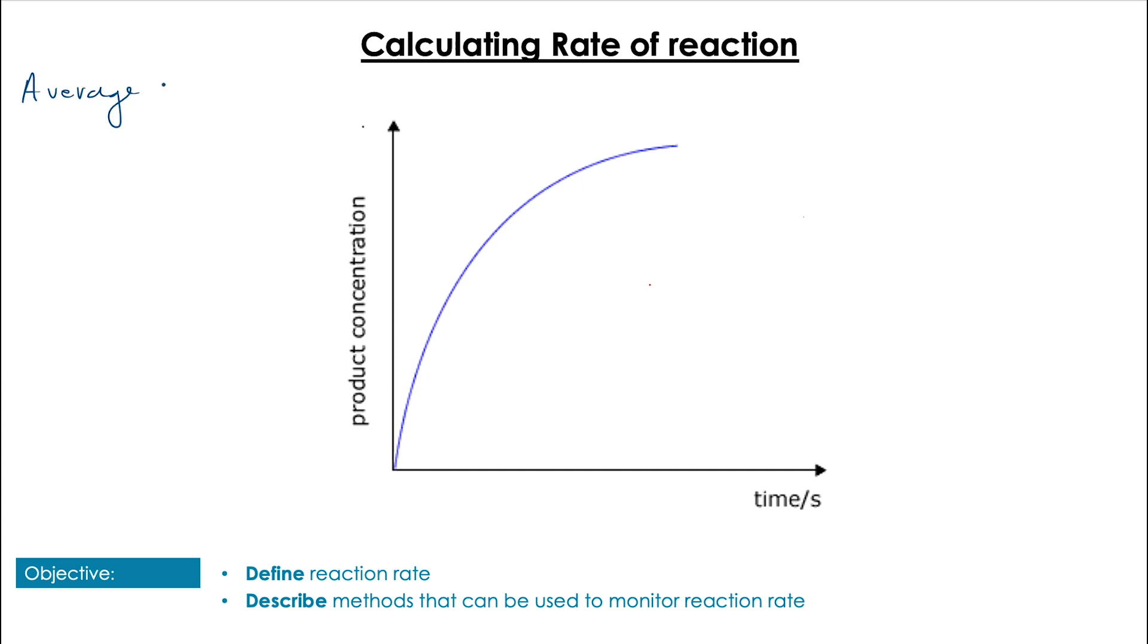And then they slow down as the reaction takes place because the concentration of the reactants decreases. This leaves us with a few different ways that we can calculate the rate of reaction using a concentration time graph. We have the average rate or we can calculate an instantaneous rate. An instantaneous rate, we can break down into two parts: one at a given time and the second one being the initial rate.